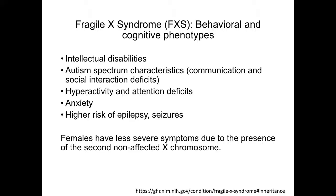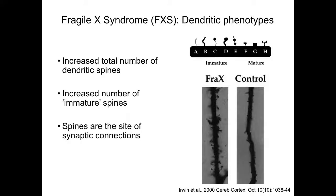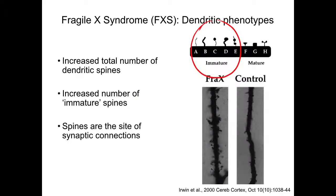Females have less severe symptoms due to the presence of the second, non-affected X chromosome. If we look in the brains of these patients, there is a dendritic phenotype that consists of an increased number of spines on neurons. Spines are the sites of synaptic connections between neurons. Most of the spines in Fragile X syndrome patients are immature, with a long, thin, mushroom-like body in appearance.